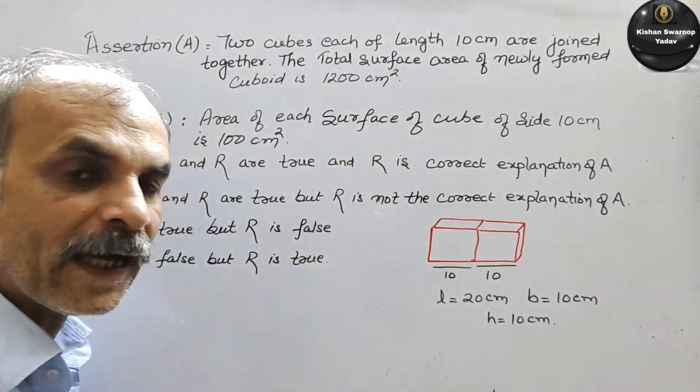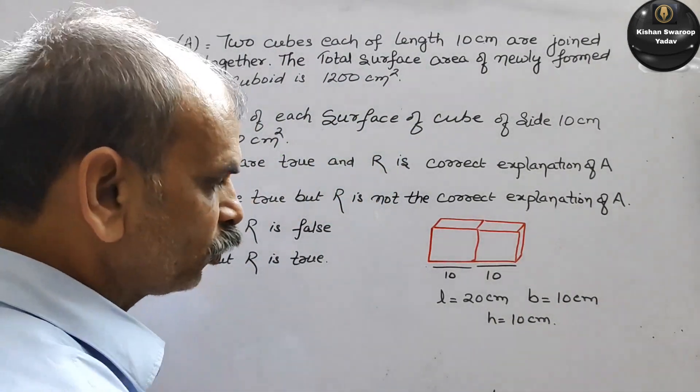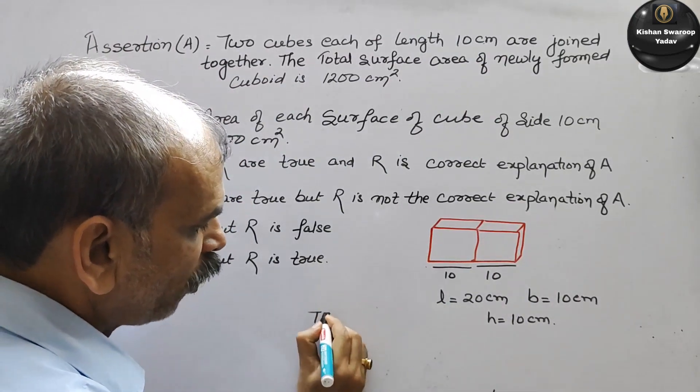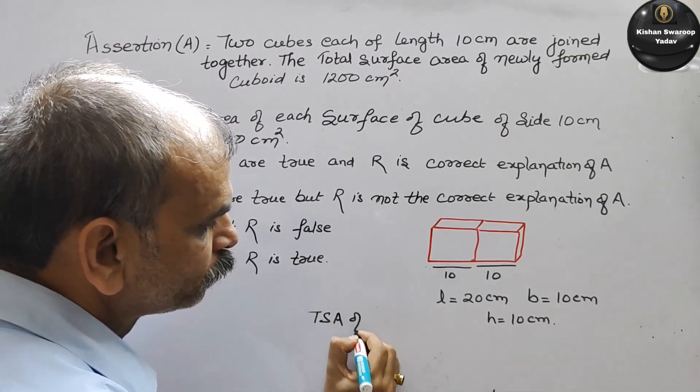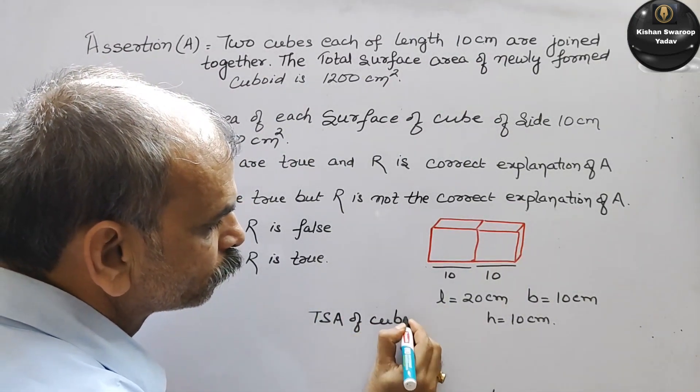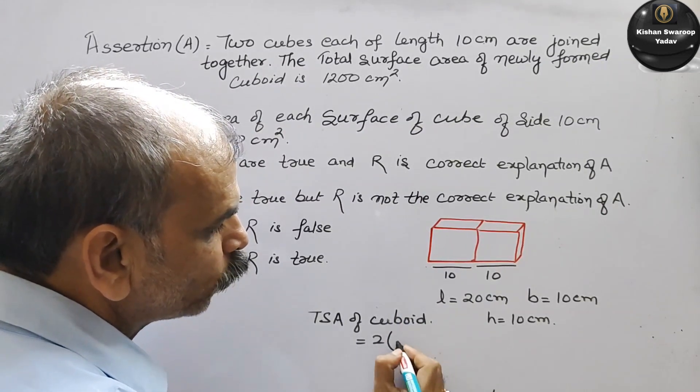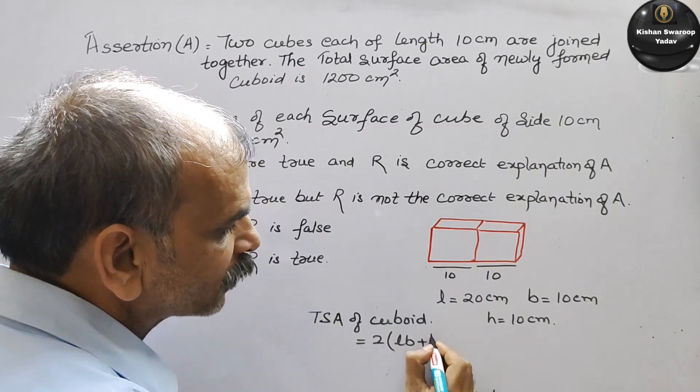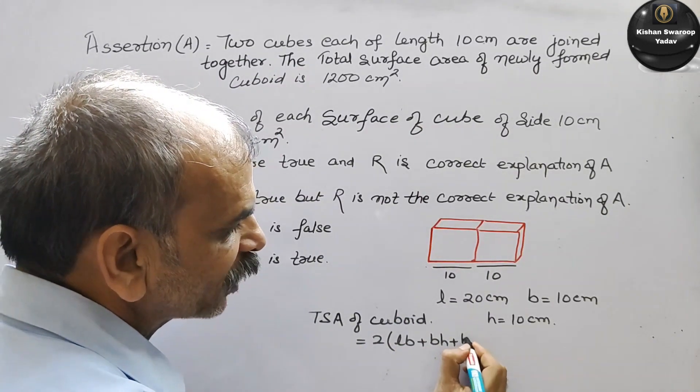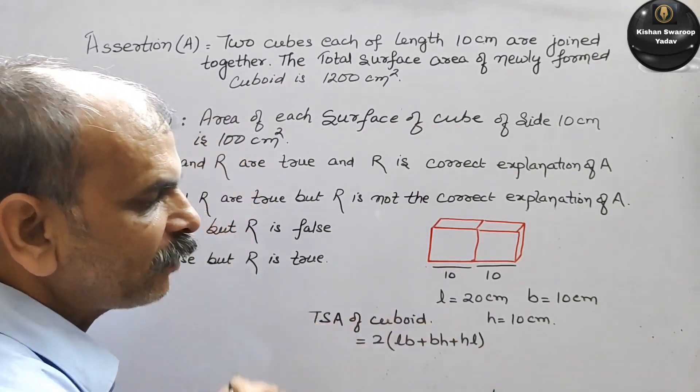Now you have to find TSA. So TSA is 2 into LB plus BH plus HL. Put the values in this.